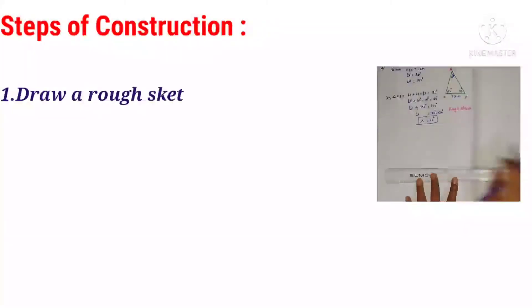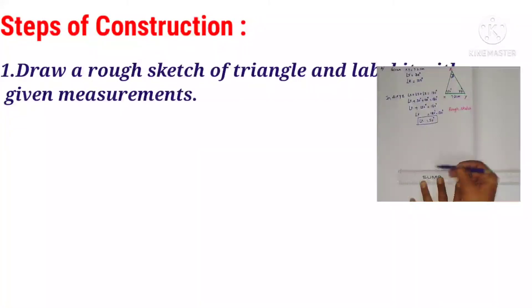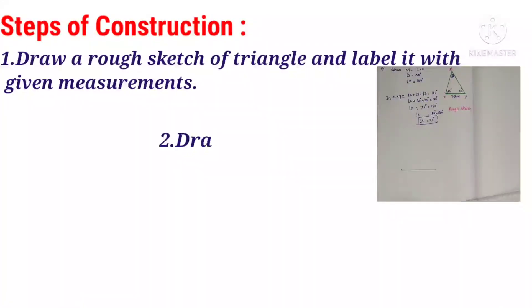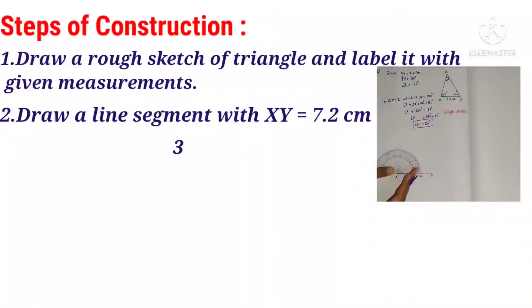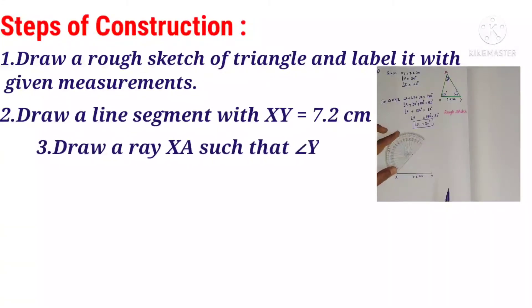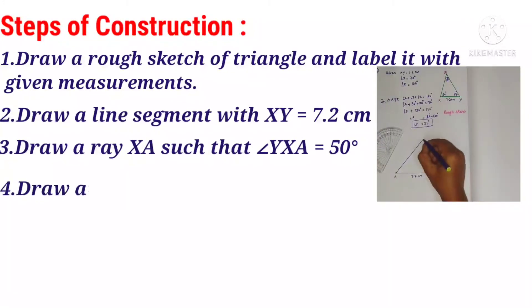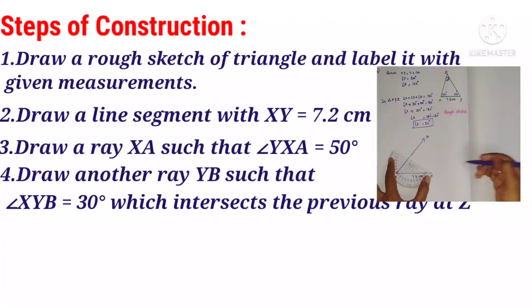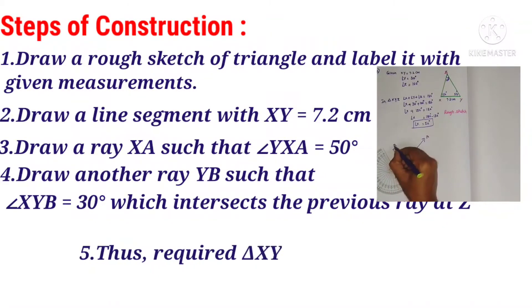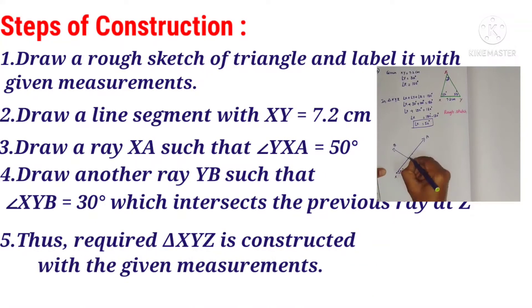Steps of construction: First, draw a rough sketch of the triangle and label it with the given measurements. Second, draw line segment XY equals 7.2 centimeters. Third, draw ray XA such that angle YXA equals 50 degrees. Fourth, draw another ray YB such that angle XYB equals 30 degrees, which intersects the previous ray at Z. Fifth, the required triangle XYZ is constructed with the given measurements.